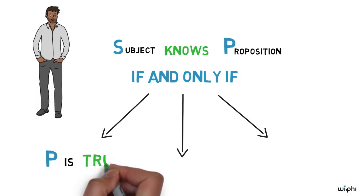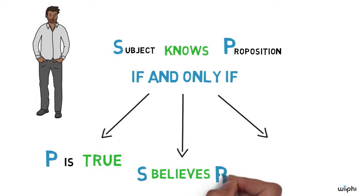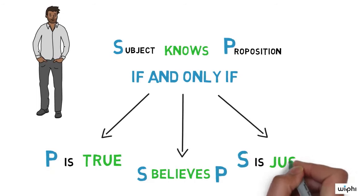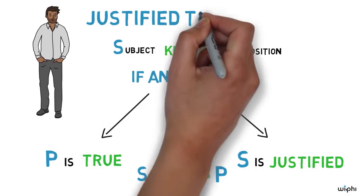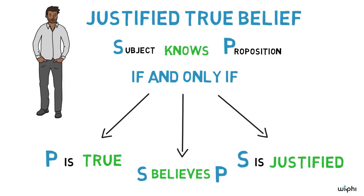P is true, S believes that P, and S is justified in believing that P. This three-part recipe is known as the JTB, or Justified True Belief, analysis of knowledge.